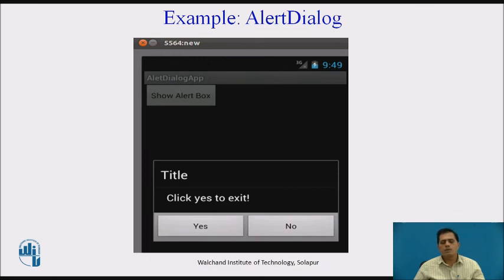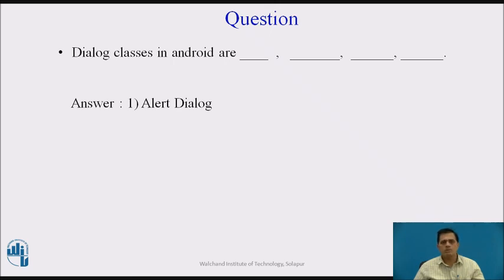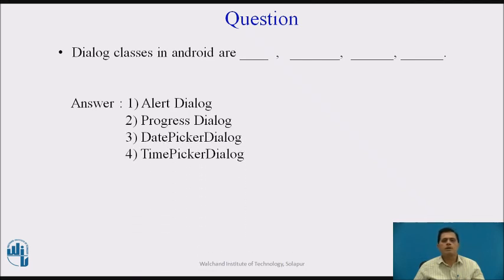The second dialog box example is another alert dialog showing a title with Yes and No buttons depending on the user's decision. After this discussion, pause the video and answer the question: dialog classes in Android are — first, AlertDialog; second, ProgressDialog; third, DatePickerDialog; fourth, TimePickerDialog. These are all the dialog classes used in Android for mobile app development.